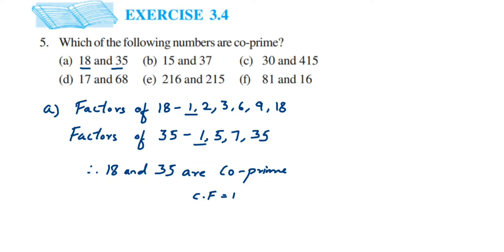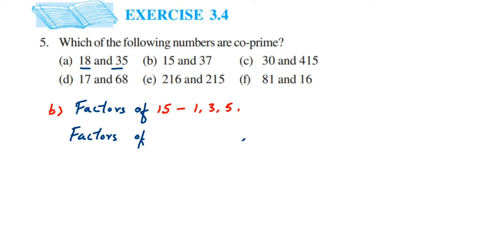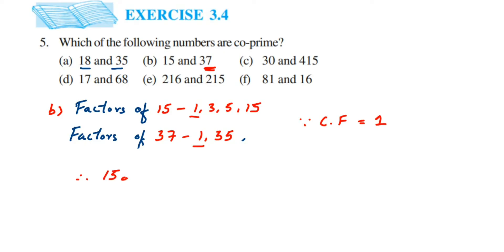The next question is 15 and 37. Factors of 15: it goes in 1, 3, 5, and directly 15. Now 37 is a prime number — it doesn't go in any table. So factors of 37 will be 1 and 37, that is 1 and the number itself. The common factor is 1, so therefore 15 and 37 are co-prime.